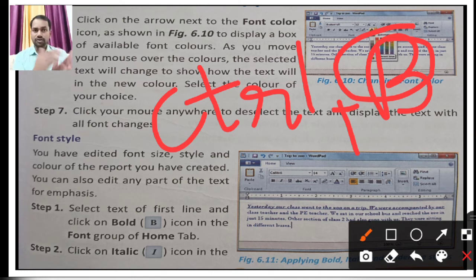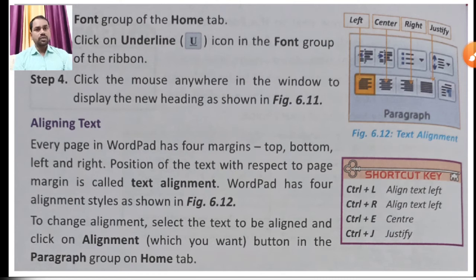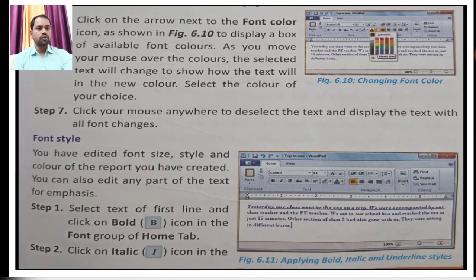The text formatting shortcuts are: Ctrl+B for bold, Ctrl+I for italic, and Ctrl+U for underline. These give you left, right alignment, and justify options as well. Step 4: click the mouse anywhere in the window to display the new heading as shown in figure 6.11. You can see the previous window showing the result of the formatting applied.